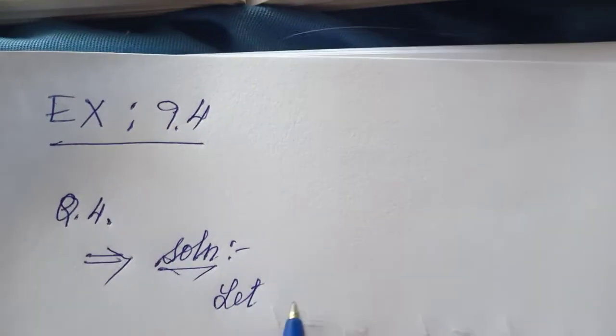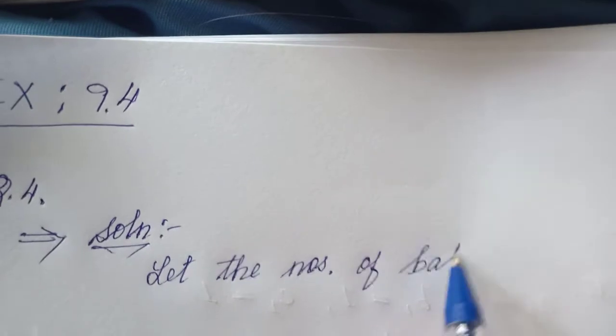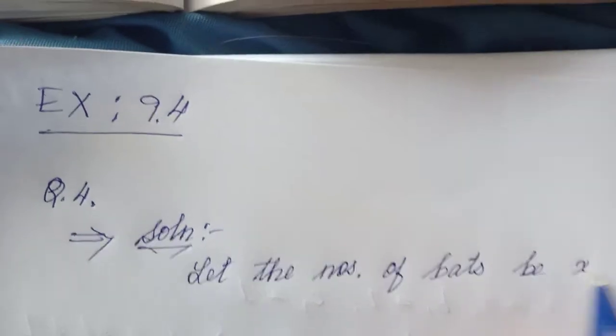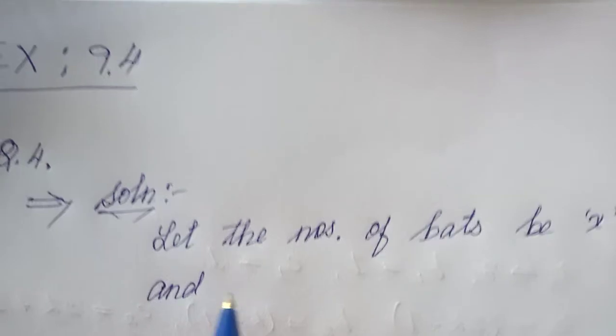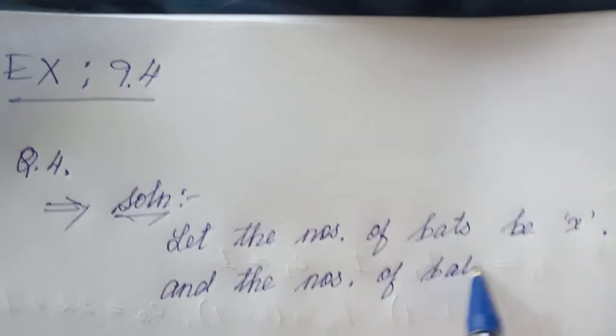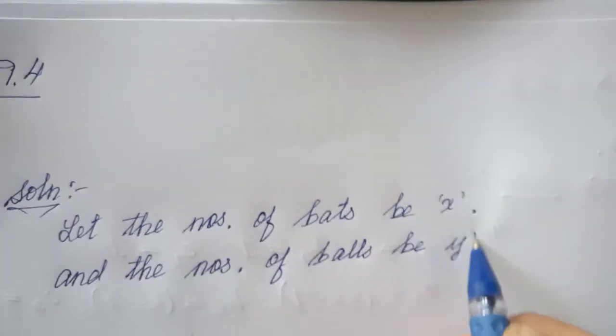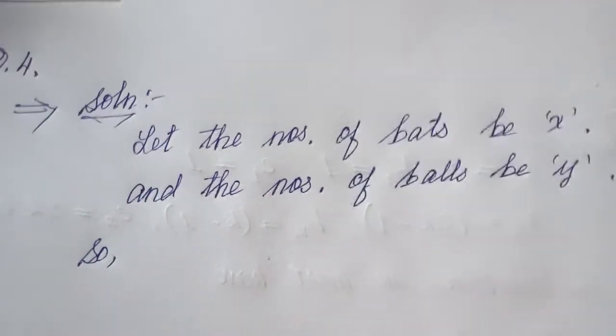It's very simple. First let's set up the solution. Let the number of bats be x, and the number of balls be y. Now we can make equations from the given information.